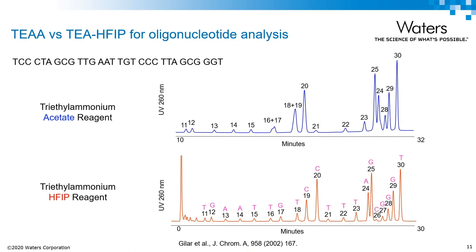Here we have a 30 mer species run using TEA buffered in both acetate and HFIP. An obvious difference between these two chromatograms is the inability of TEAA to separate all of the failed sequences compared to TEA-HFIP. TEAA, which is a less efficient ion pairing agent, shows changes in selectivity and even has some co-elutions.